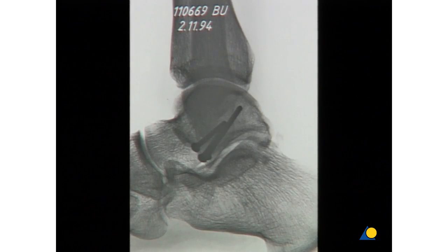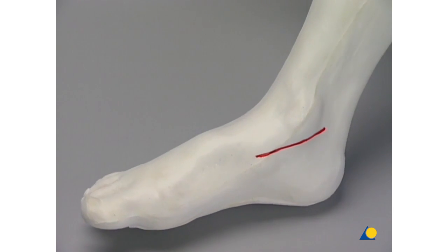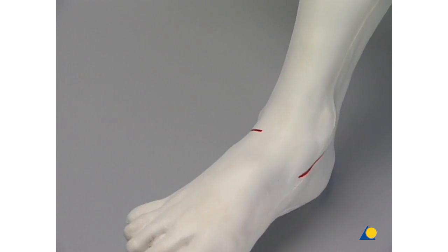70% of the surface of the talus is covered by cartilage. We will perform our exercise through the anteromedial and the anterolateral approaches.